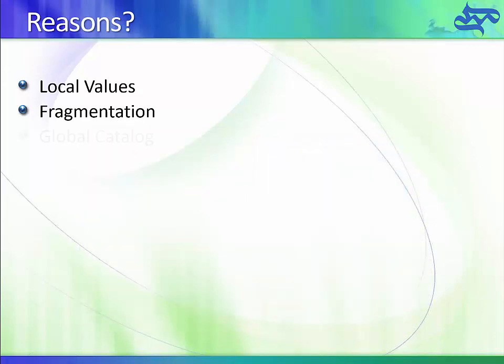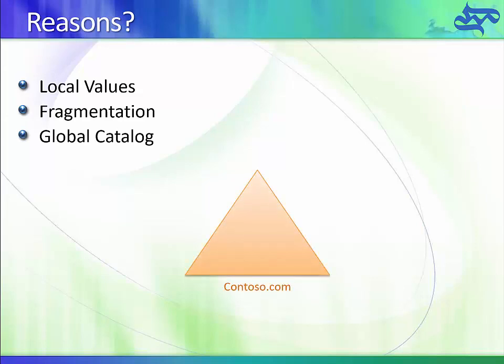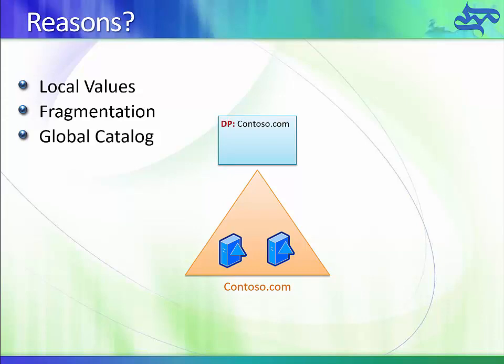In our example, let's consider a domain with two domain controllers. Domain controllers use something called partitions to replicate information to each other. There are different types of partitions in Active Directory. The first is the domain partition (DP), which stores all information about the domain — user accounts, passwords, computer accounts, security groups, and so on.